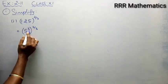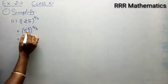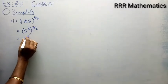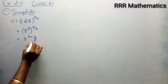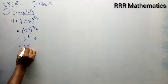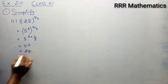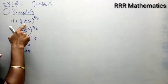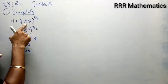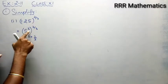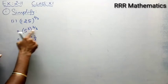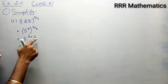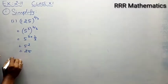So I can write 125 as 5 cubed, whole power 2 by 3. I can use the property and multiply the powers: 5 power 3 × 2/3. The 3s cancel, giving 5 squared, which is 25. That's the answer. Using prime factorization, 125 = 5³, then multiplying the powers 3 × (2/3), the 3s cancel and we get 5² = 25.